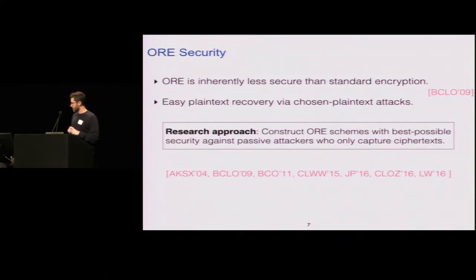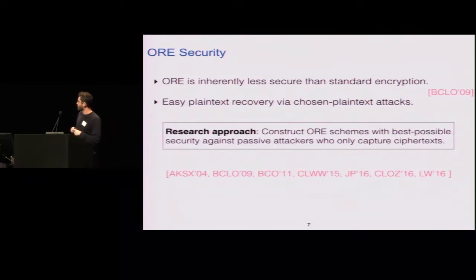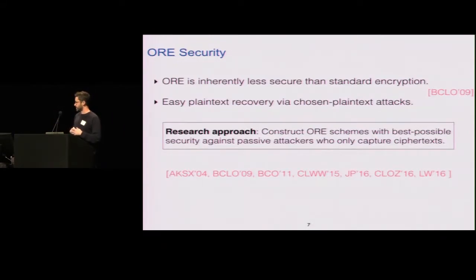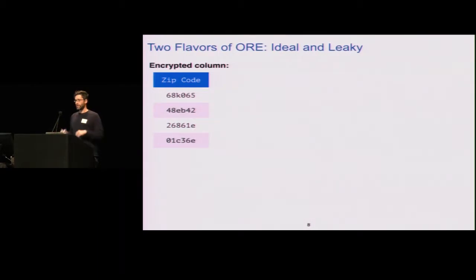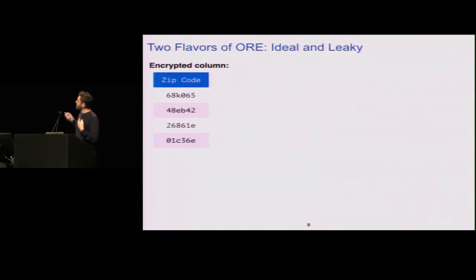There have been several works — including many since we did this research — but the key thing to understand is that there are really two flavors of order-revealing encryption: ideal and leaky. Ideal is strictly more secure than the leaky version. One way to understand it is to think about what would happen if somebody captured an ORE-encrypted column of zip codes. With ideal ORE, it's designed and proven to only reveal the order of the ciphertexts.